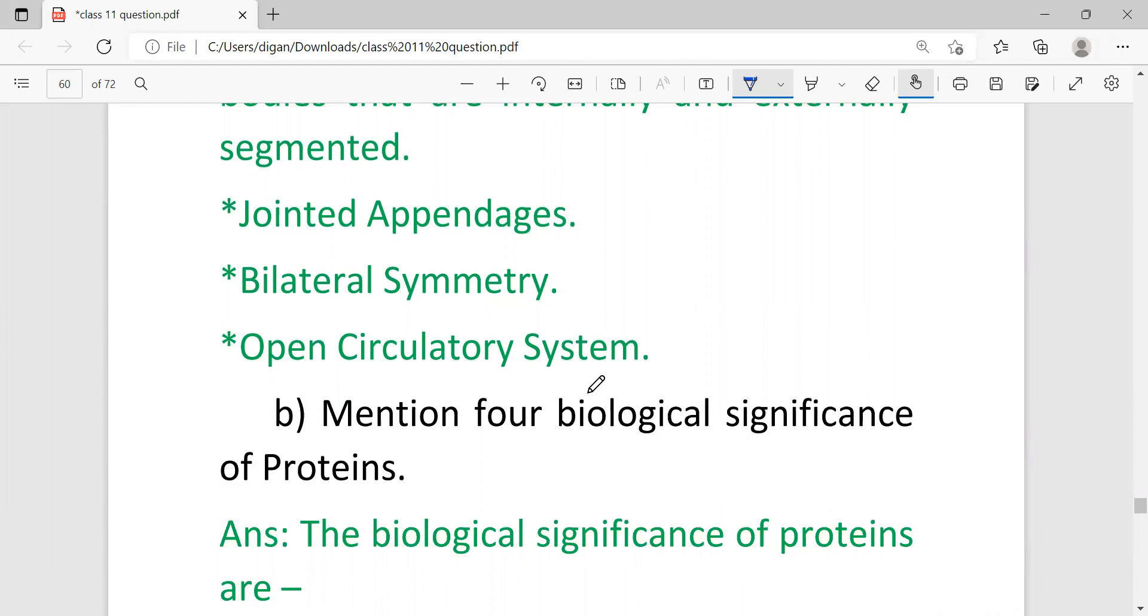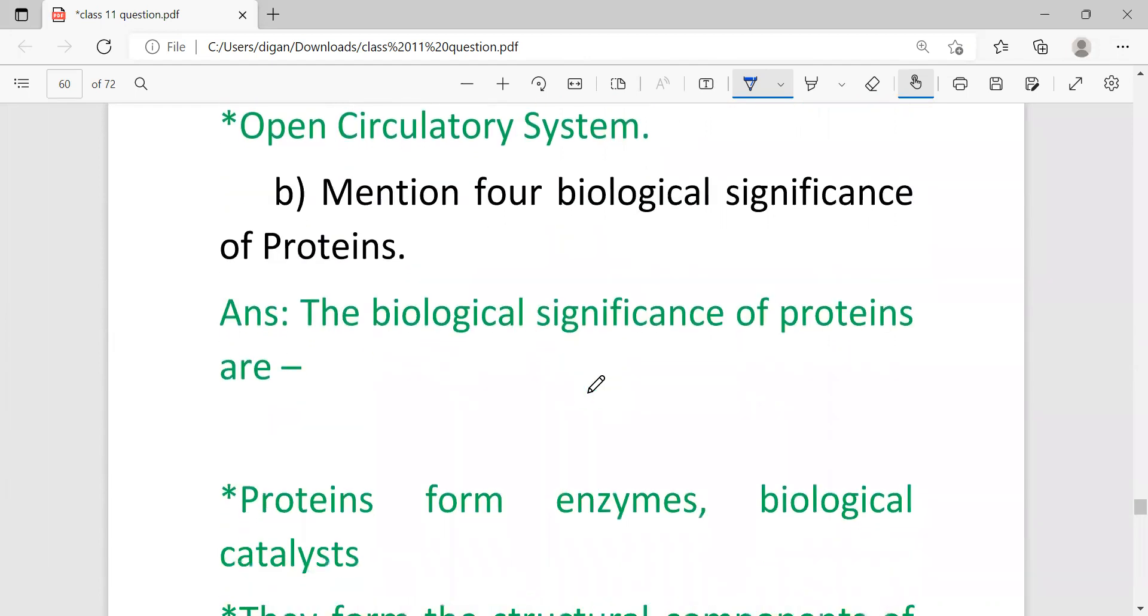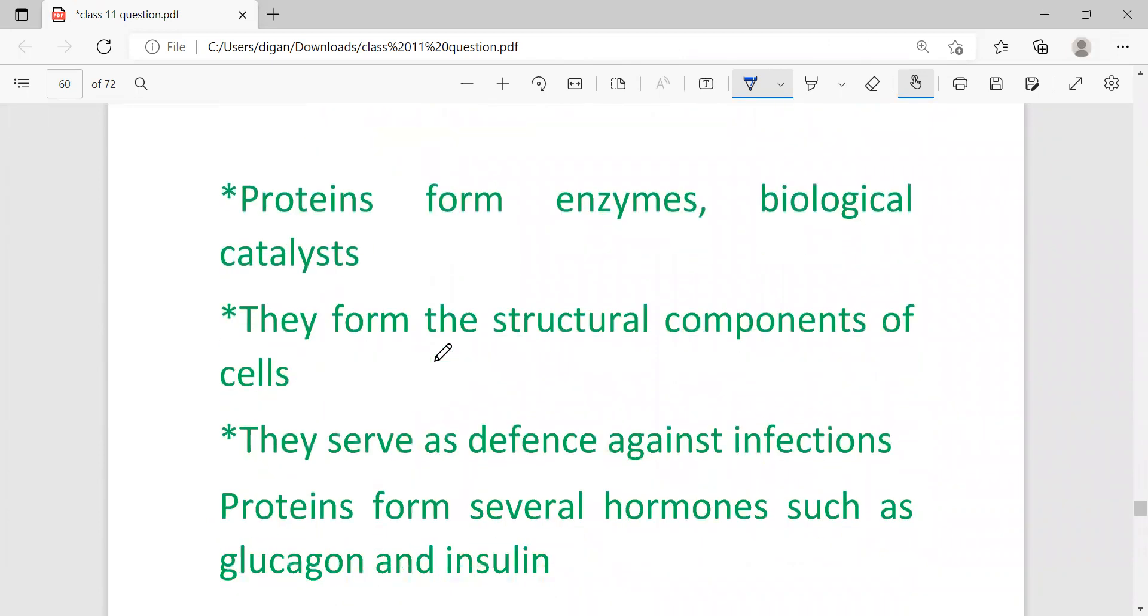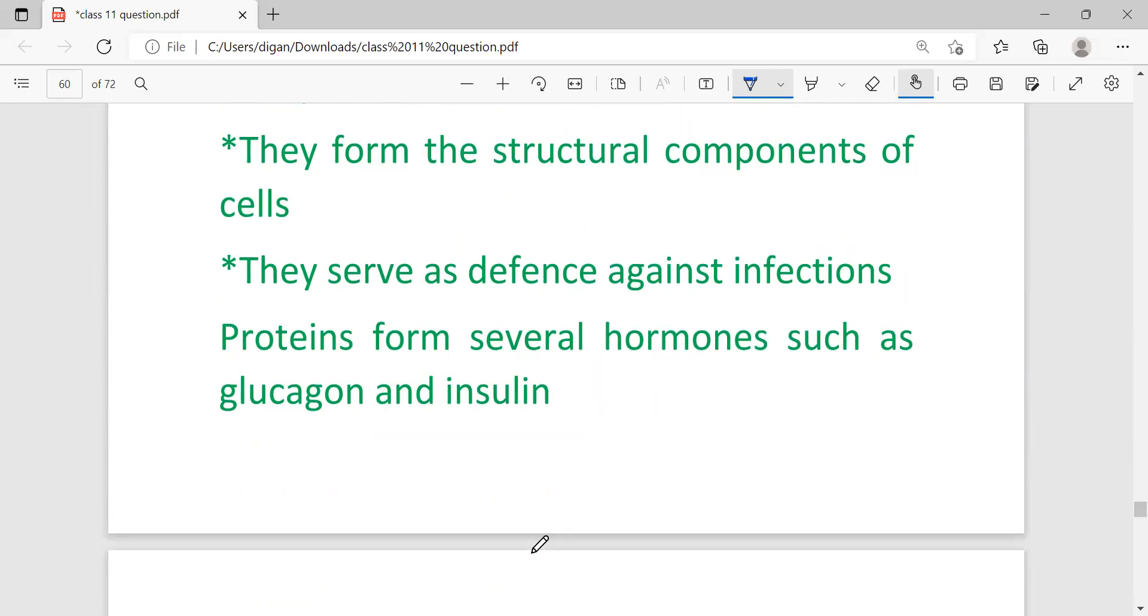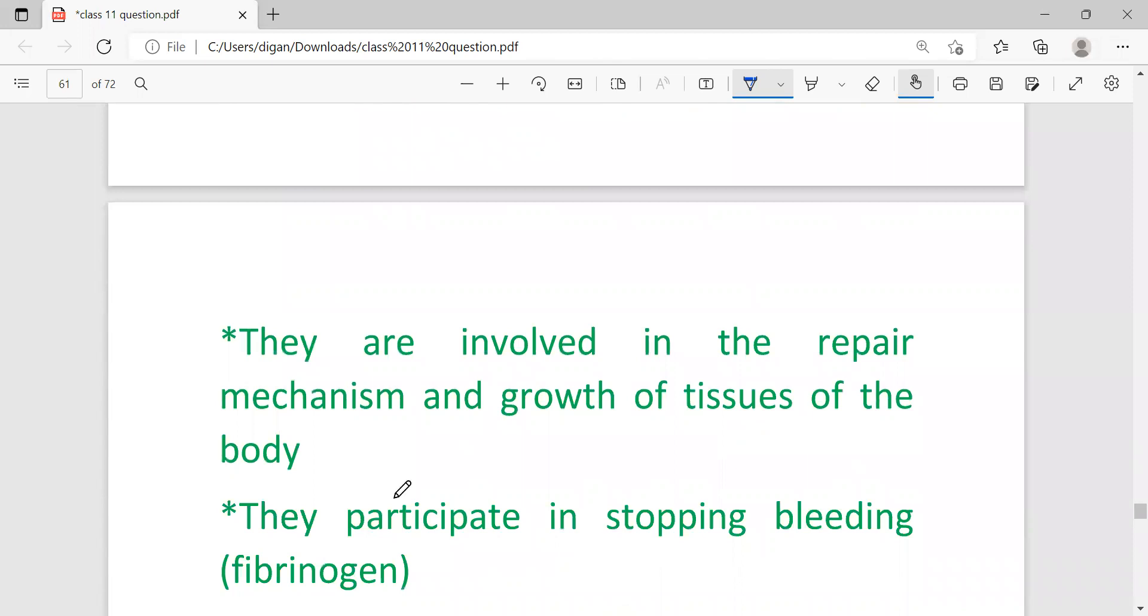Mention four biological significance of protein. The biological significance of proteins are: proteins are enzymes, biological catalysts; they form the structural component of cells; they serve as defense against infection; proteins form several hormones such as glucagon and insulin; they are involved in the repair mechanism and growth of tissue of body; they participate in stopping bleeding with the help of fibrinogen fiber.